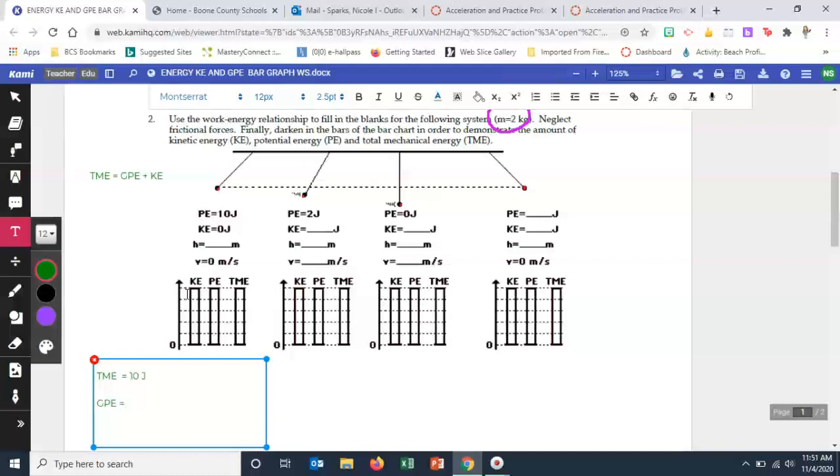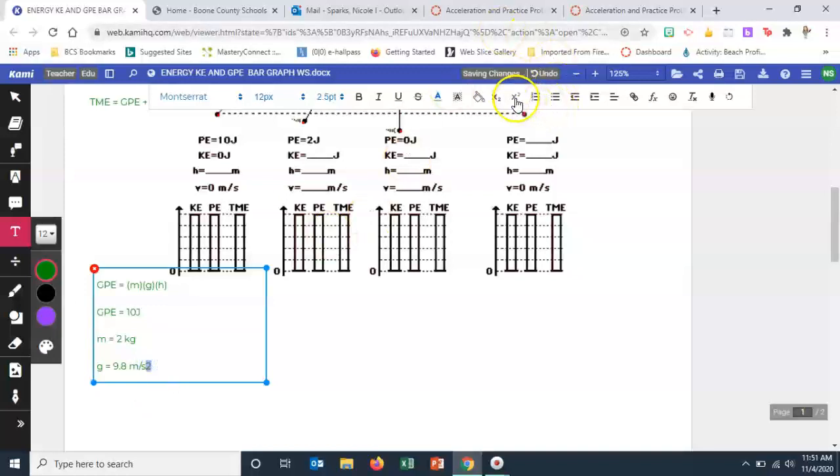We can use the potential energy equation, our GPE equals our mass, our gravity, and our height. We can use that to help us figure out that height right there, which we don't know. So let's kind of fill in our variables. We know GPE that equals our 10 joules. We know the mass of this object is two kilograms. We also know gravity is always 9.8 meters per second squared. But we do not know the height.